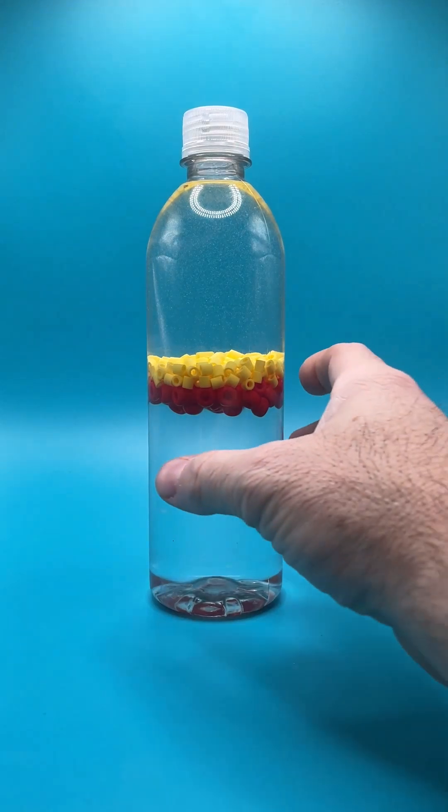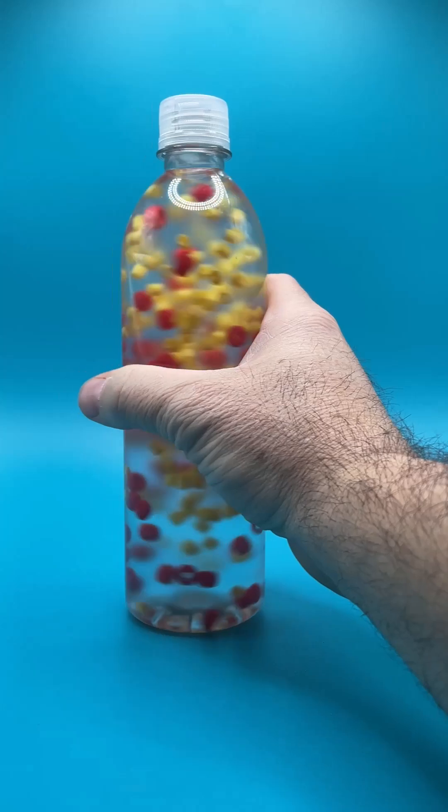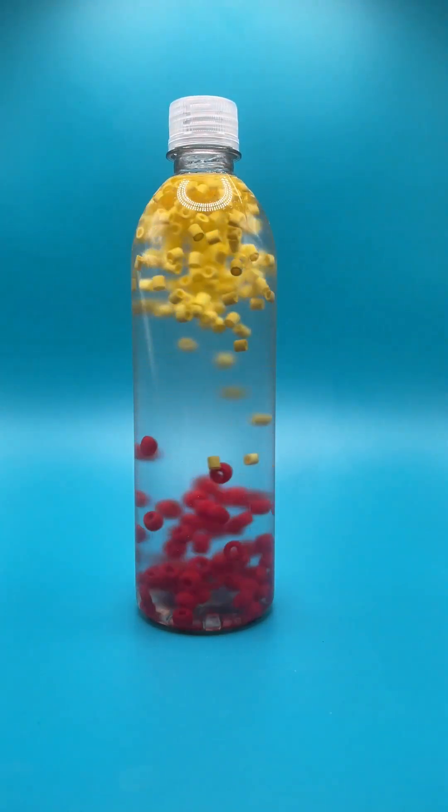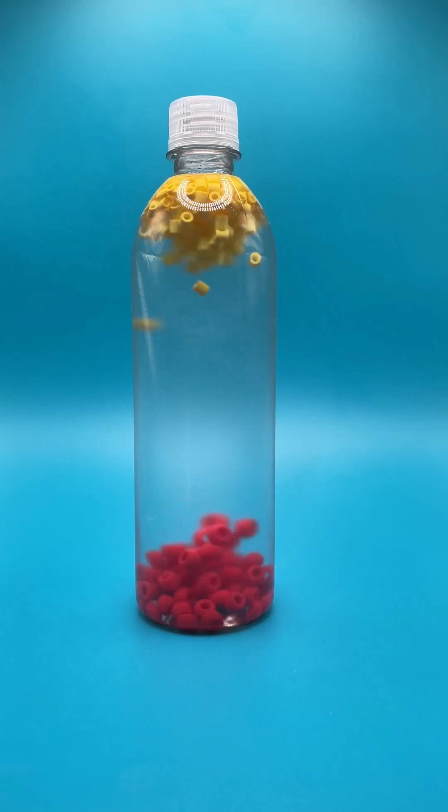To separate the beads even further, grab the bottle and give it a good shake. Once the spinning of the fluid stops, look what happens. The yellow beads float to the top of the fluid and the red beads sink to the bottom.